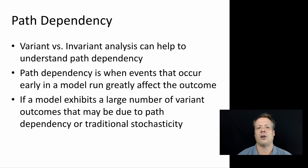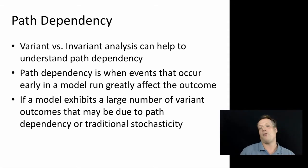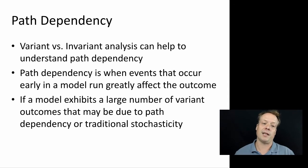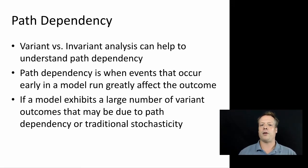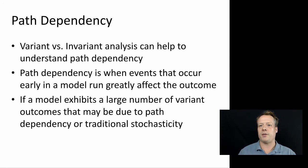This variant versus invariant analysis can also help you understand path dependency — when events that occur early in the model run greatly affect the outcome. For example, if a certain fraction of influentials adopt your product early on, that could have a great effect on when the peak adoption rate is. A model exhibiting a large number of variant outcomes can be a clue that you're heading toward path dependency, though it could also just be stochastic variance.